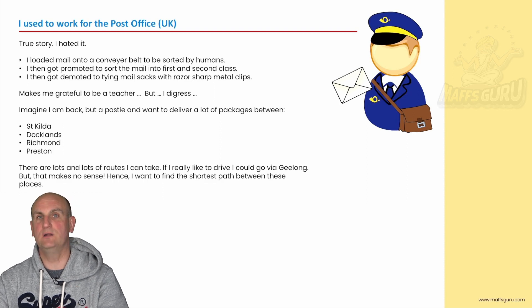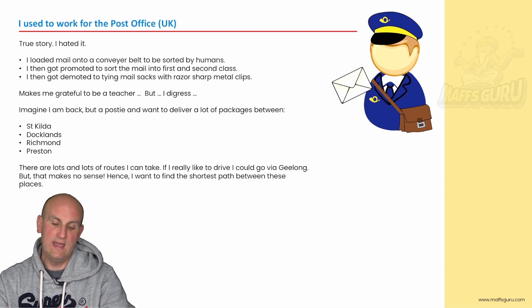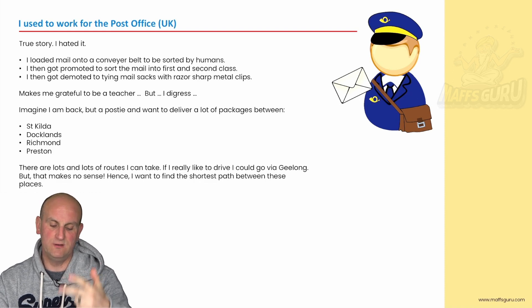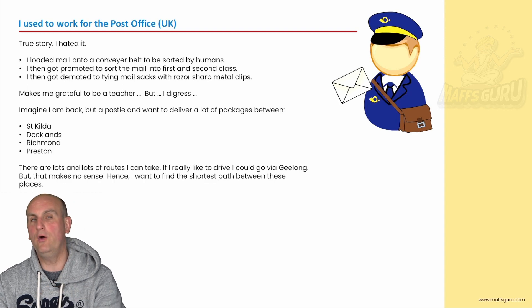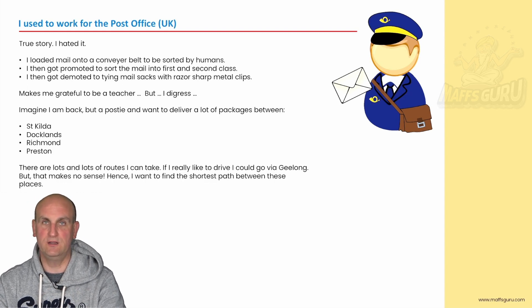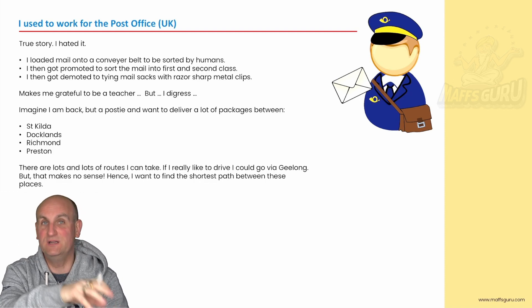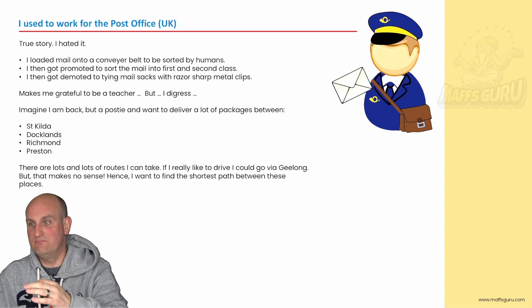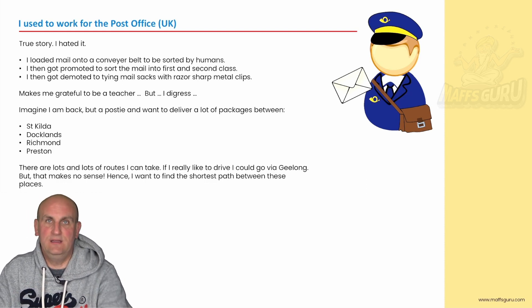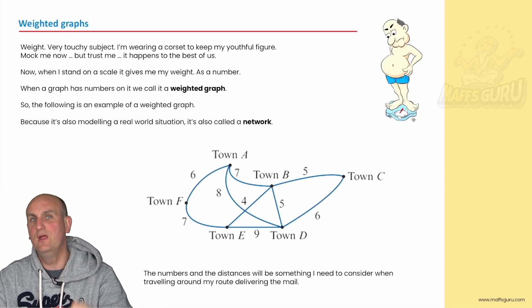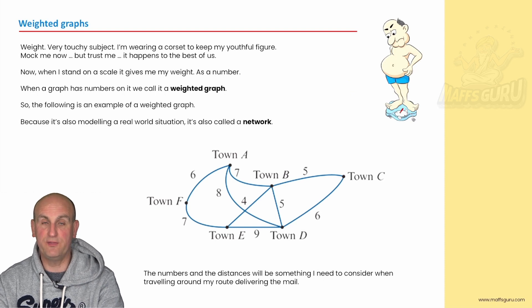Anyway, just thinking about it makes me grateful to be a teacher. But if I was to imagine I was actually going to be a postie on a round, as I've said before, and I want to deliver a lot of packages between St Kilda, Docklands, Richmond, and Preston, there are lots and lots of different routes I could take. Because roads connect in all sorts of different ways. And how does my GPS know how to get me the best way from A to B? There must be an algorithm or some sort of way to do it. And in fact there is.